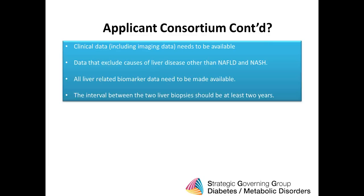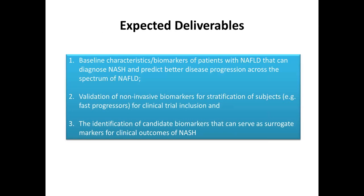We need clinical data including imaging data to be available on the subjects. We also need access to data that excludes causes of liver disease other than NAFLD and NASH. Biomarker data and biospecimens that have been collected need to be made available. We are also expecting to be able to take another biopsy in these subjects — that should be at least two years from the initial biopsy. The number of liver biopsies may in fact be more than two, depending on when the subjects are introduced into the cohort.